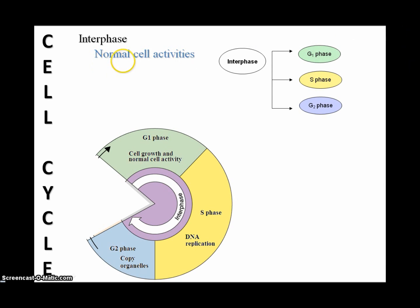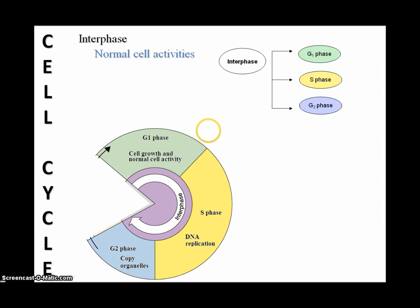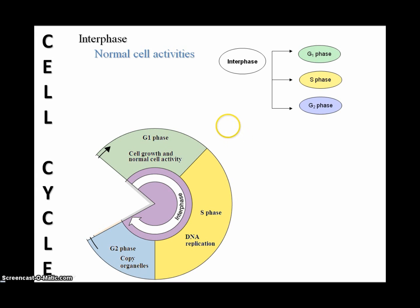Interphase is the point where normal cell activities are taking place, and there are three substages to this period. The first stage is the G1 phase, where the cell is growing. As it continues to grow, it becomes less efficient, and so at some point there becomes a critical moment where the cell needs to divide to get smaller and therefore more efficient. Interphase is probably the longest phase of any given cell.